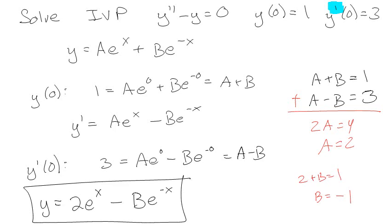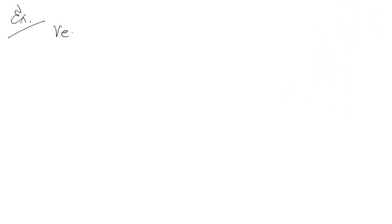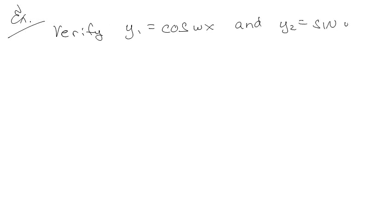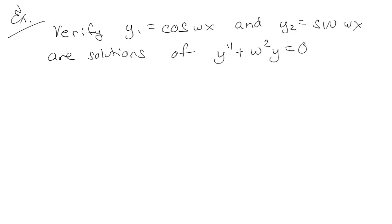So this whole idea of finding one solution, finding the other, then taking the linear combination and finding the constants — this comes up a lot. Let's try another one. Verify that y₁ = cos(ωx) and y₂ = sin(ωx) are solutions of y'' + ω²y = 0. Pause the video and see if you can work through this — this is great practice.